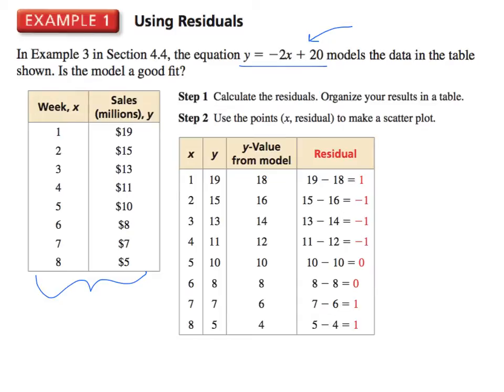For example, if I plug in 1 here, negative 2 times 1, so 20 minus 2 is 18. I plug in 2, 20 minus 4 is 16. I plug in 3, I plug in 4. So all of these are based on the model. However, these are the actual values. So the residual is the difference from the actual ones in the scatter plot to the ones based on the model. As you can see, we always take this side minus the model. So we take 19 minus 18, which is 1. 15 minus 16, which is negative 1. 13 minus 14 is negative 1. And we continue this pattern.